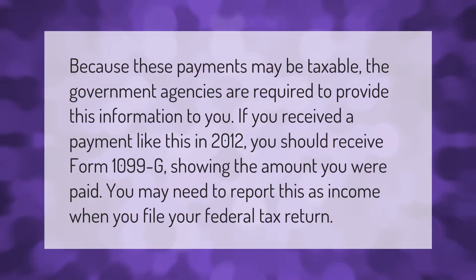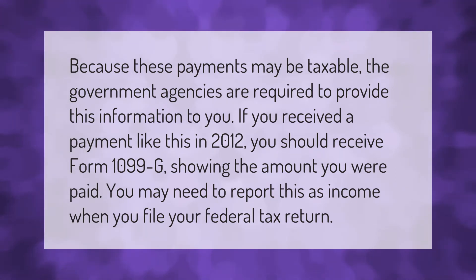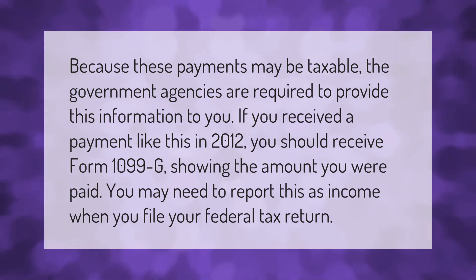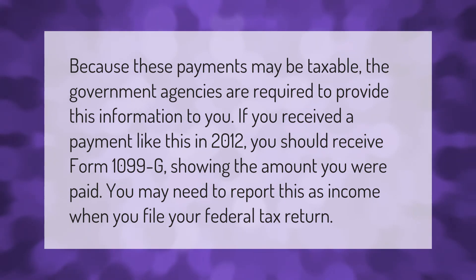Because these payments may be taxable, government agencies are required to provide this information to you. If you received a payment like this in 2012, you should receive Form 1099-G showing the amount you were paid. You may need to report this as taxable income when you file your federal tax return.